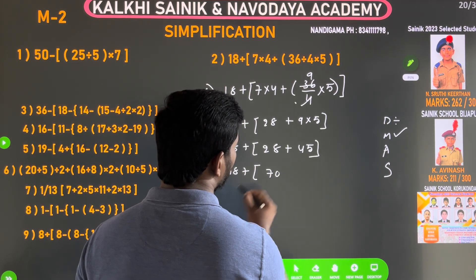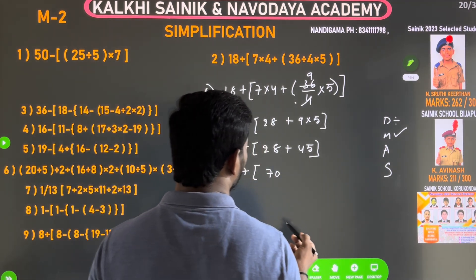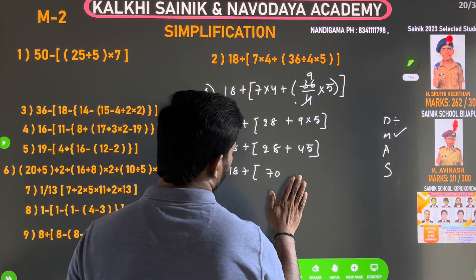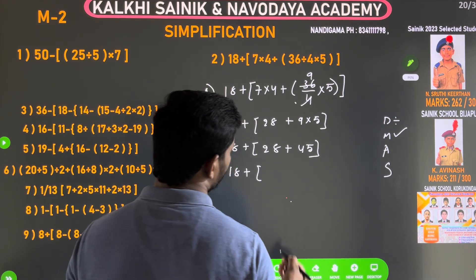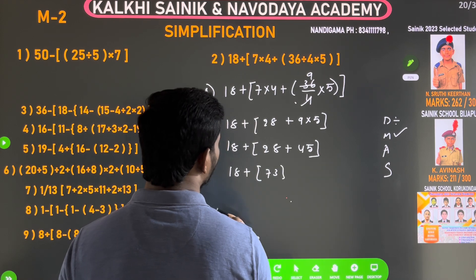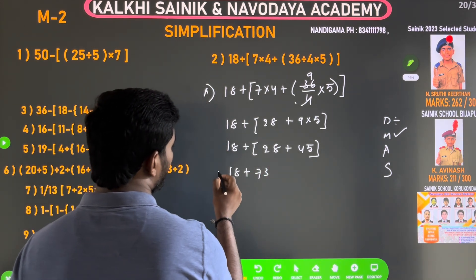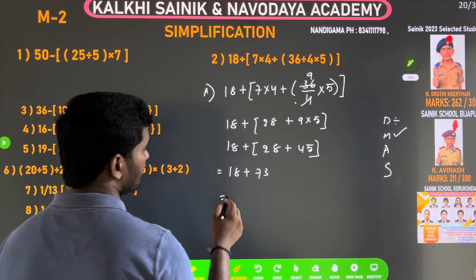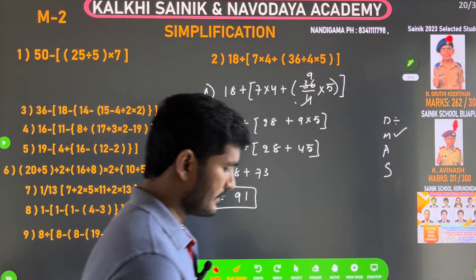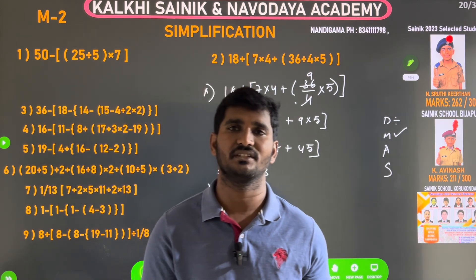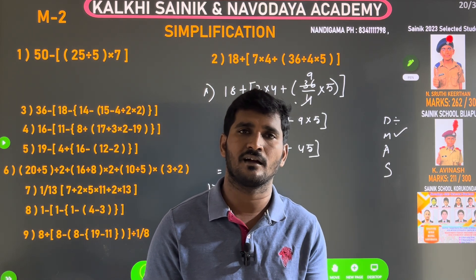73 is the result. 20 plus 40 is 60, and 8 plus 5 is 13, giving 73. So 18 plus 28 plus 45: 20 plus 40 is 60, 8 plus 5 is 13, that is 73. This bracket is 73. I will say that the result is 73.